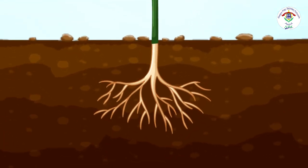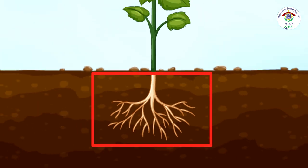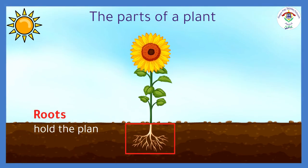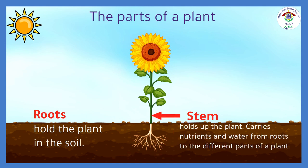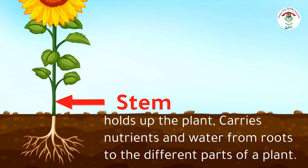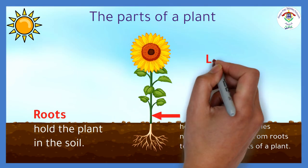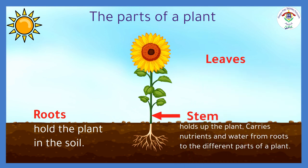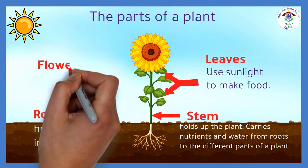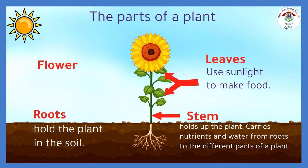Roots hold the plant in the soil. The stem holds up the plant and carries nutrients and water from the roots to the different parts of a plant. Leaves use sunlight to make food. The flower makes seeds.